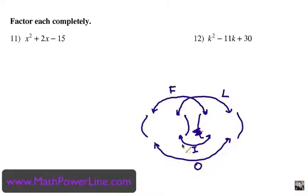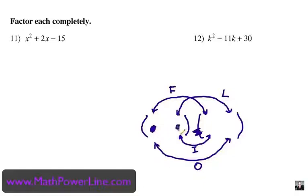When I teach the FOIL method, I talk about making the smiley face. It looks like we've got two eyes up here, a nose being made here, and then ears and maybe a chin or a mouth. You notice how you have two parts in each — binomial times a binomial.